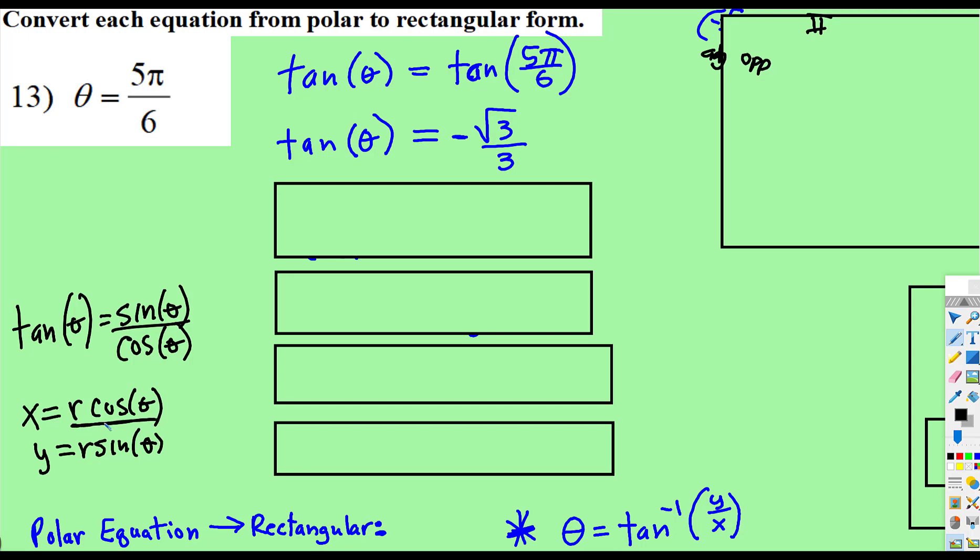So if we can get sines and cosines back into this, eventually, once we have it as r cos, we can rewrite it as x, and r sin we can rewrite as y. So I'm going to rewrite tangent as sin over cos,